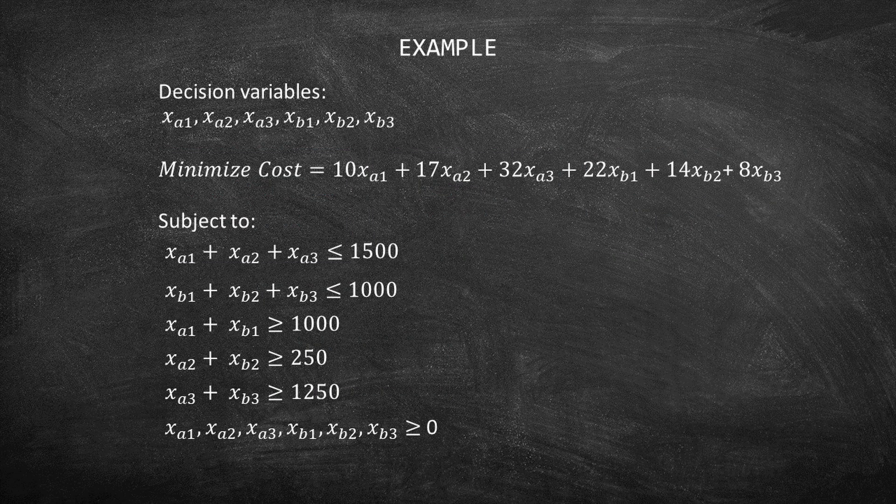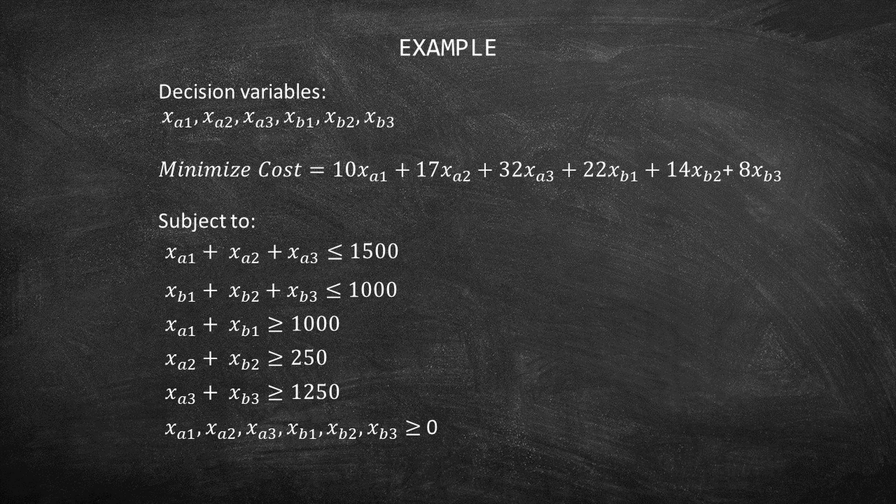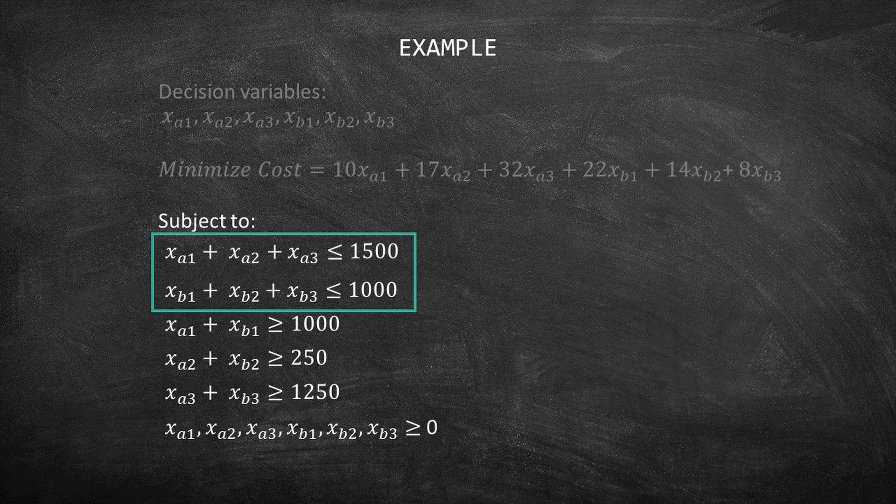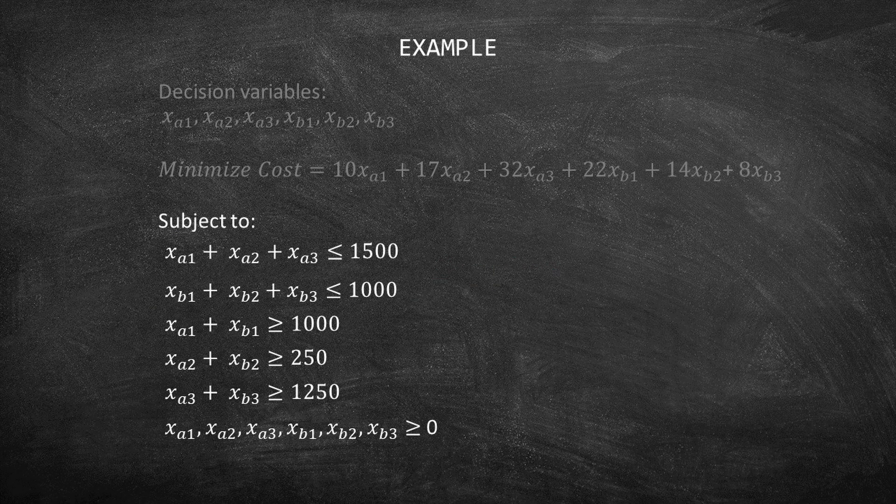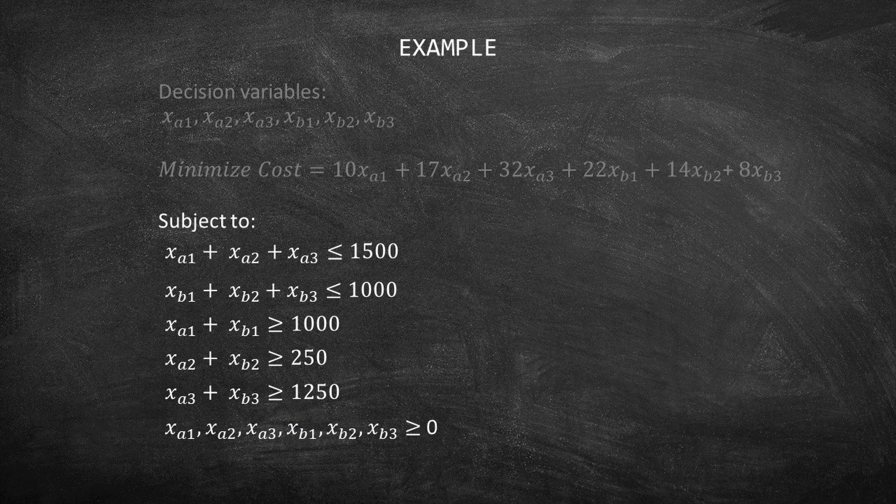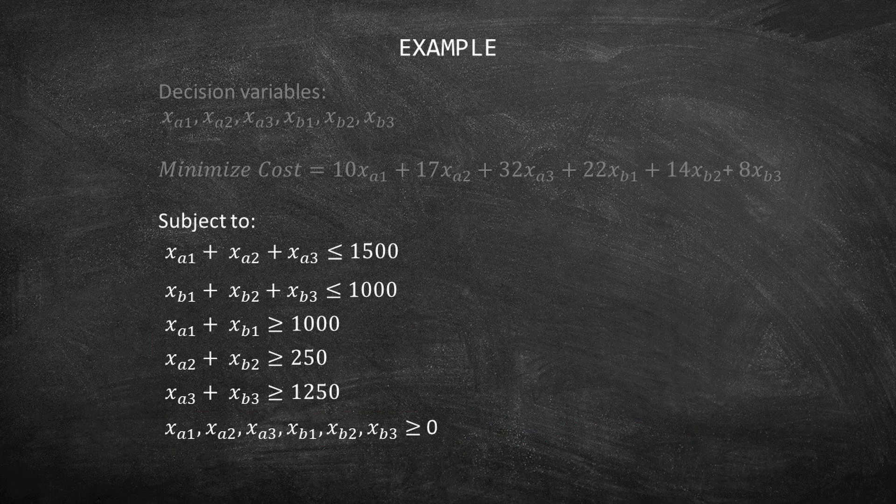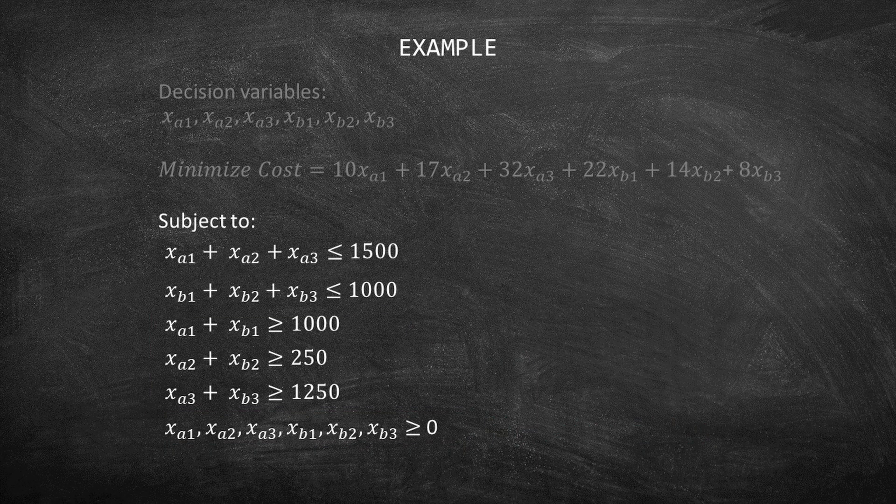Our next step is to write the constraints in an iterated form. Let's go back to the model. There are three types of constraints: suppliers constraints, demand constraints, and non-negativity constraints. We are going to write each one at a time.